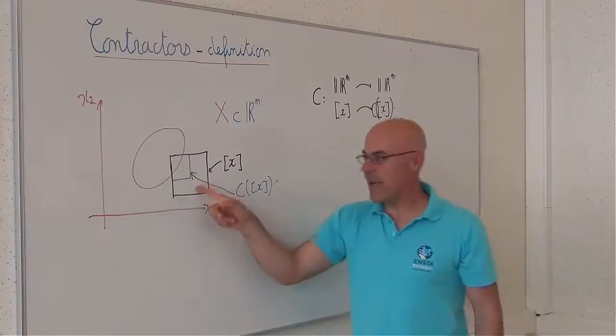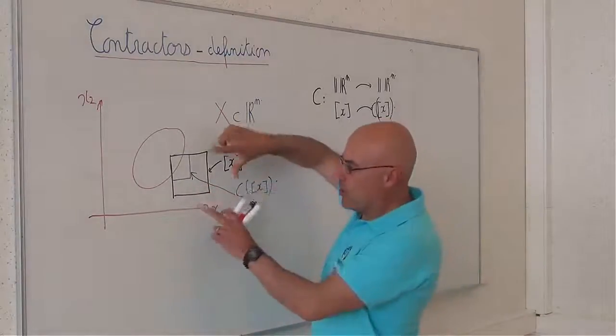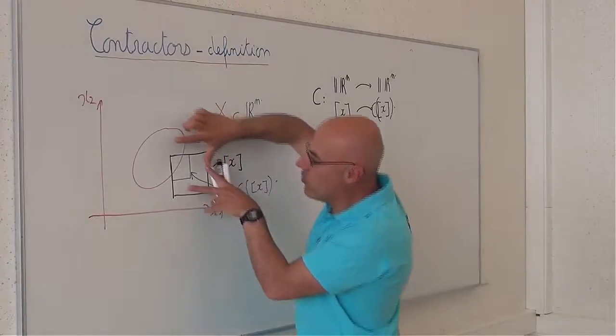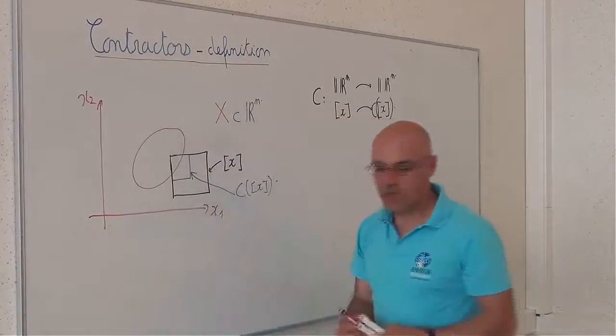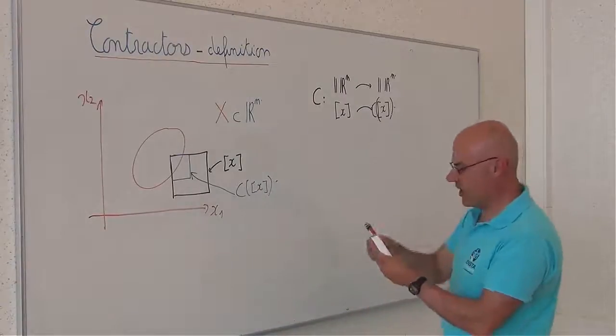Note that as in the picture, no points of X have been removed by the contraction. So I should have the following properties to be a Contractor.